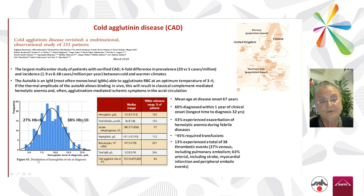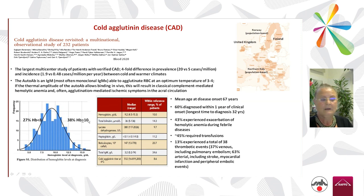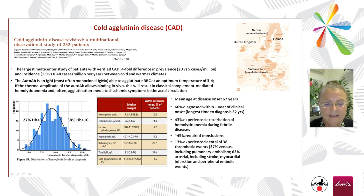This leads to classic complement-mediated hemolytic anemia and sometimes also agglutination-mediated ischemic symptoms in the acral circulation. About one-third of cases are very severe; in the middle there are patients with hemoglobin around 10 g/dL; and a few cases have a good hemoglobin level and may need no therapy. Other markers — bilirubin, LDH, haptoglobin — also show very wide distribution, and the cold agglutinin titer varies considerably between patients.